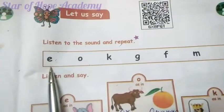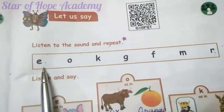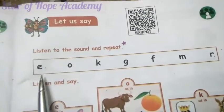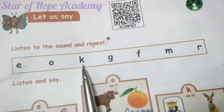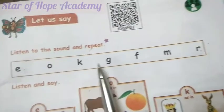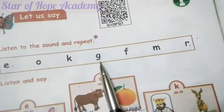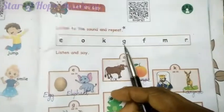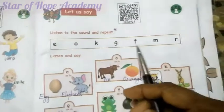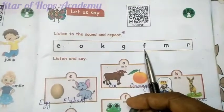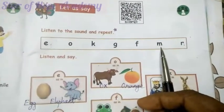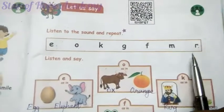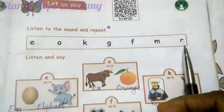See children. This is the letter E but its sound is A. This is the letter O — this sound is A. This is the letter K, its sound is K. This is the letter G but its sound is G. This is the letter F, its sound is F. This is the letter M, its sound is M. This is the letter R, its sound is L.